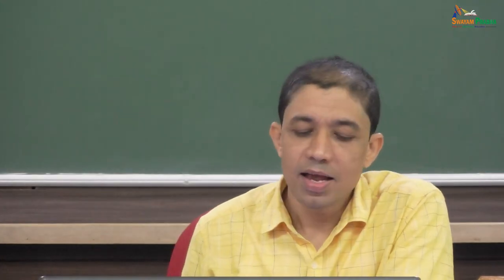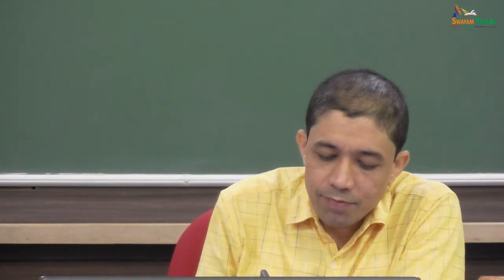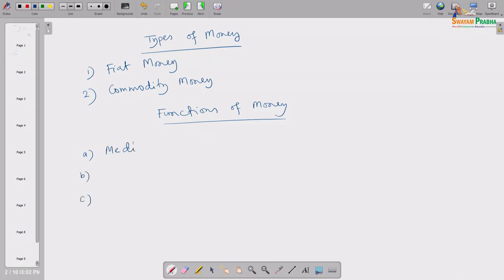These are the two types of money. Now let us discuss the functions of money. Money performs broadly three functions — let us discuss each one by one.